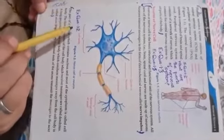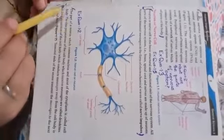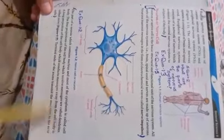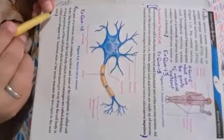Question number 1.2. The answer will start from this line: the part of neuron which contain nucleus and most of the cytoplasm is called cell body. Up to this.